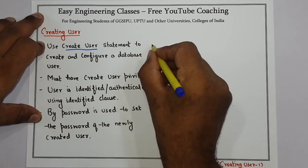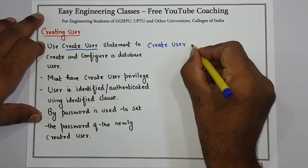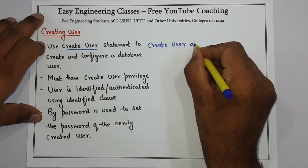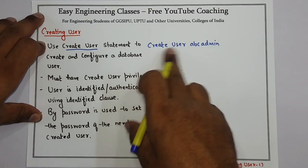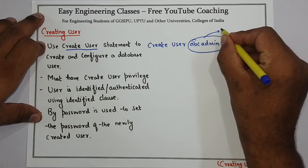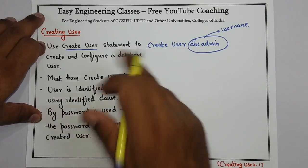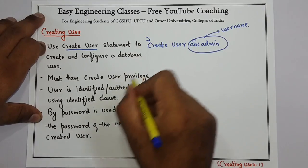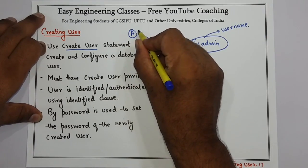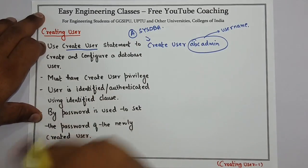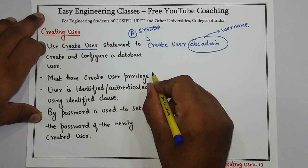You can create a user with a command like: CREATE USER, then the username — for example, ABC_Admin. The user firing this SQL command must have SysDBA admin access. So if user A is firing this command, user A must be a SysDBA or have admin privileges. The user must have the CREATE USER privilege or be a SysDBA user.